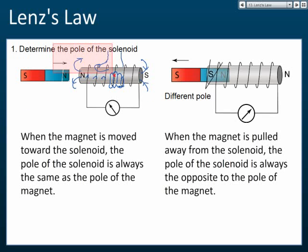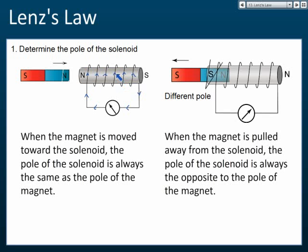The current moves up. So if the north pole is pushed into the solenoid, this end becomes a north pole, and by the right-hand grip rule we know the current moves up on this side, then moves down and to the left on the other side. If the current moves to the left, then the galvanometer will deflect to the left. Once you know this is a north pole, you use the right-hand grip rule to find the current direction, and from the current direction you know the deflection of the galvanometer.